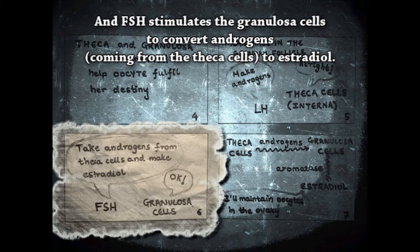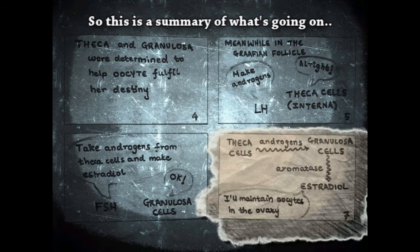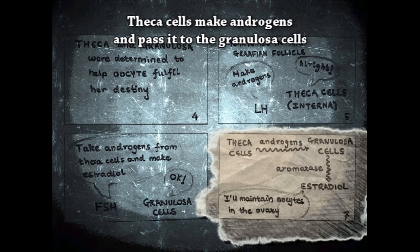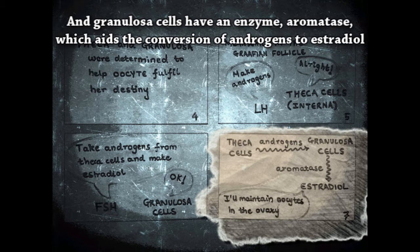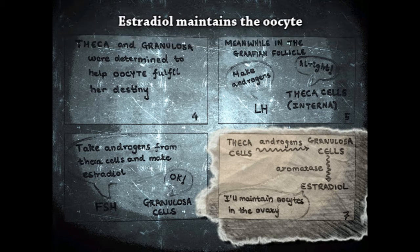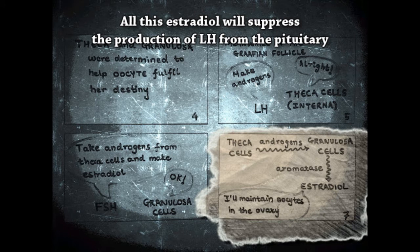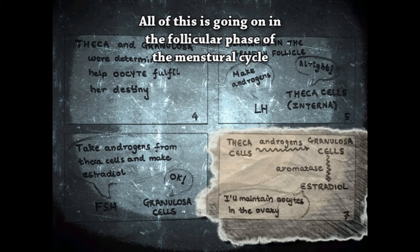Androgen is a substrate for estrogen biosynthesis. FSH stimulates the granulosa cells to convert androgens coming from the theca cells to estradiol. So in summary: theca cells make androgens and pass them to the granulosa cells, and granulosa cells have an enzyme — aromatase — which aids the conversion of androgen to estradiol. Estradiol maintains the oocyte. All this estradiol will suppress the production of LH from the pituitary. All of this is going on in the follicular phase of the menstrual cycle.